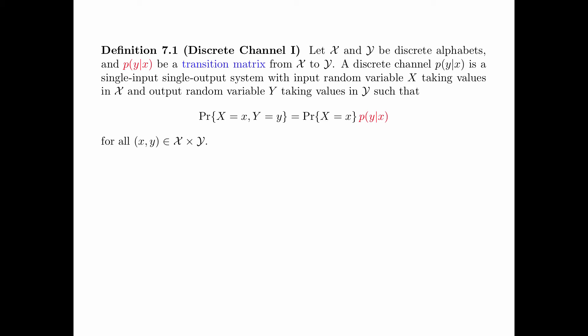Definition 7.1 is the formal definition for discrete channel 1. Let x and y be discrete alphabets, and P(y|x) be a transition matrix from x to y. A discrete channel P(y|x) is a single-input, single-output system with input random variable x taking values in x and output random variable y taking values in y, such that the probability that x equals x and y equals y is equal to P(x) times P(y|x) for all possible (x, y) pairs.